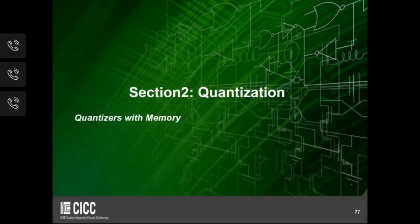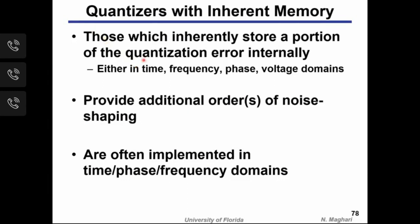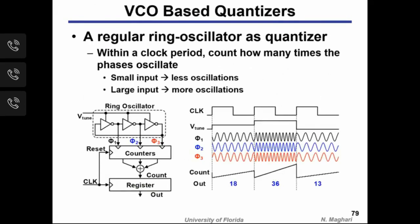The second major quantizer category is quantizers with memory — quantizers that inherently store a portion of the quantization error internally in the time, frequency, phase, or voltage domain. Unlike externally feeding back a SAR's residue, memory is intrinsic to these quantizers. They typically provide first-order noise shaping and are most naturally implemented in time, phase, or frequency domains.